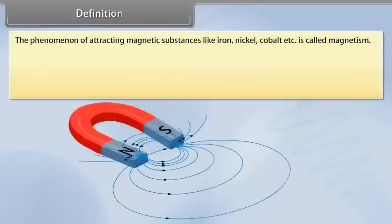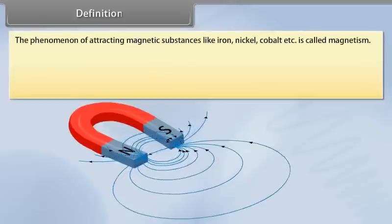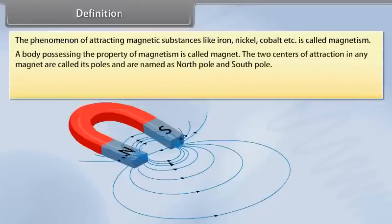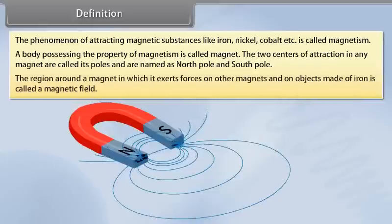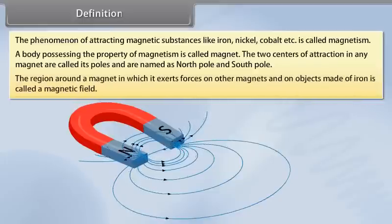Definition: The phenomenon of attracting magnetic substances like iron, nickel, cobalt, etc., is called magnetism. A body possessing the property of magnetism is called a magnet. The two centers of attraction in any magnet are called its poles, named as north pole and south pole. The region around a magnet in which it exerts forces on other magnets and on objects made of iron is called a magnetic field.